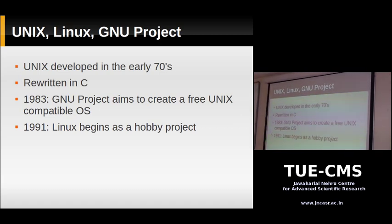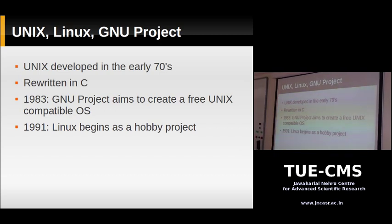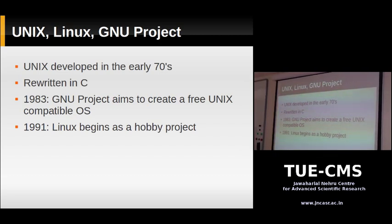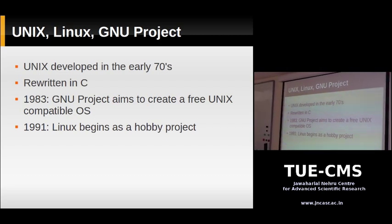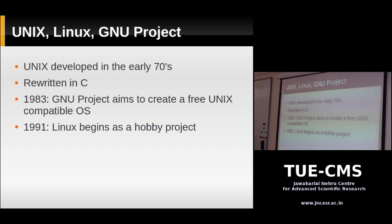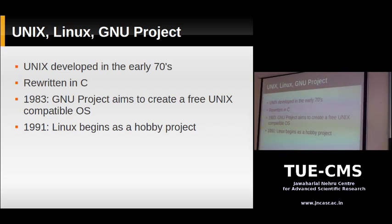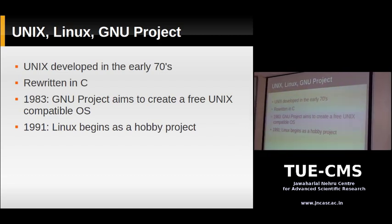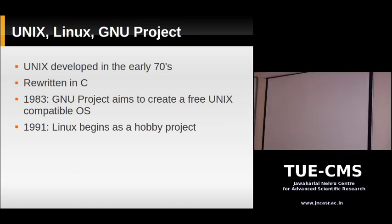Once Unix became popular, the source code was available under license from AT&T, and many variants developed — BSD Unix, HP Unix, and others. They shared a similar design but some diverged and became quite different.